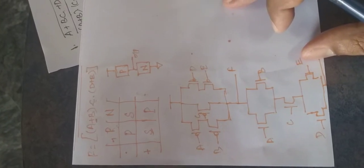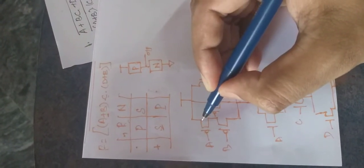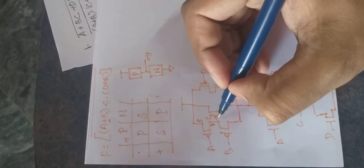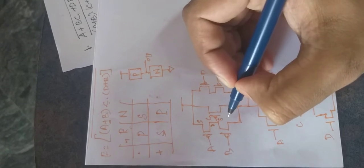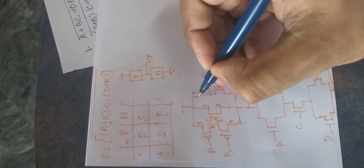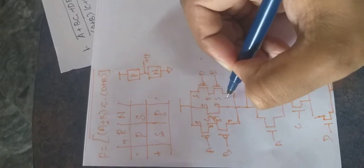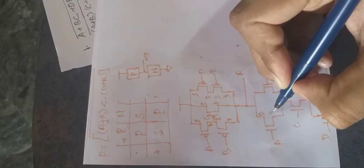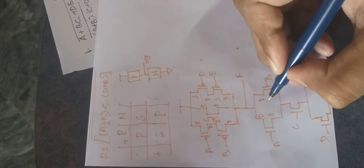For an NMOS transistor it will be reversed — the drain will be at the top and the source will be at the bottom. Now we are going to mark the source and drain terminals on this diagram. For transistor A: source at top, drain at bottom. Similarly for B: source, drain. We mark source and drain for the entire PMOS network, and similarly for the NMOS network.